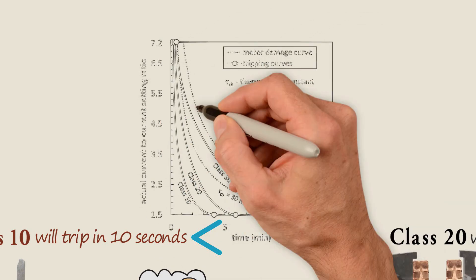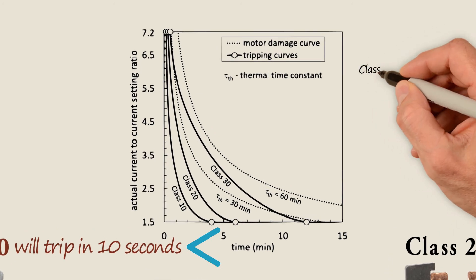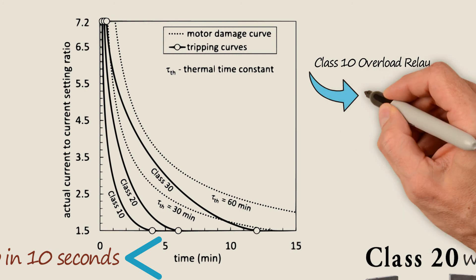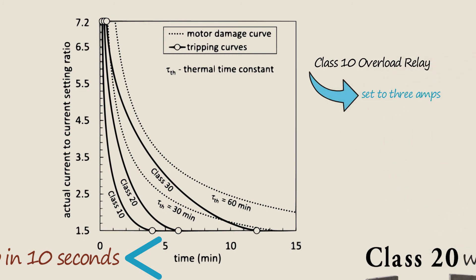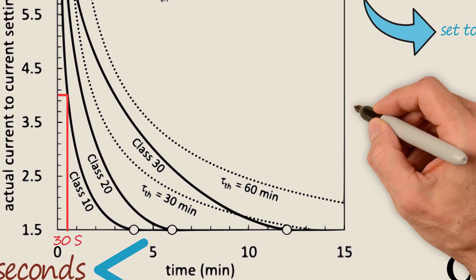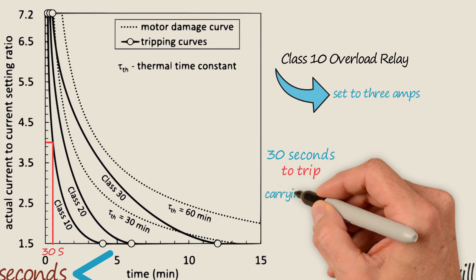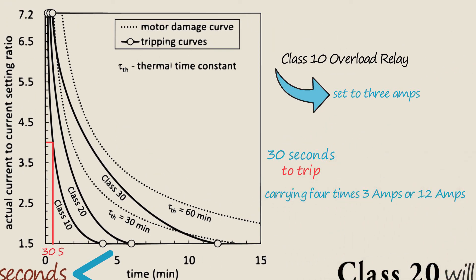Manufacturers should supply a graph that shows the tripping time as a function of current. As an example, consider an adjustable Class 10 overload relay that has been set to 3 amps. The graph shows it would take around 30 seconds to trip if it was carrying four times the 3 amps, or 12 amps.